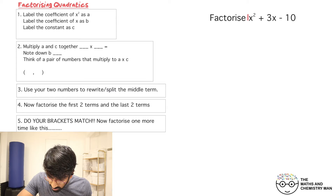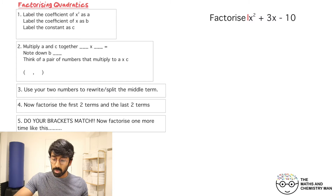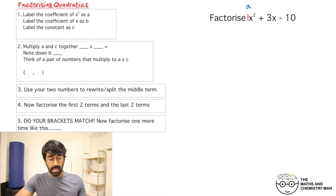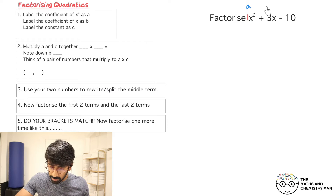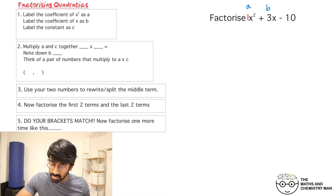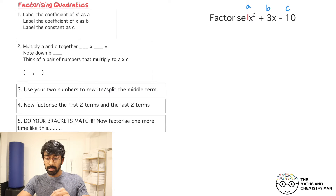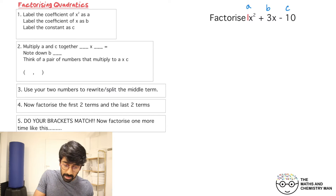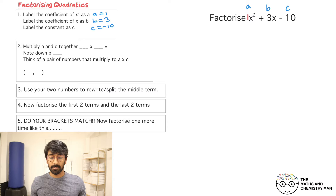So there's the one. I'm going to write label a on top of that, then label the coefficient of x as b, and label the constant on the end as c. So so far we've got a equals 1, b equals positive 3, and c equals minus 10. Step one done.